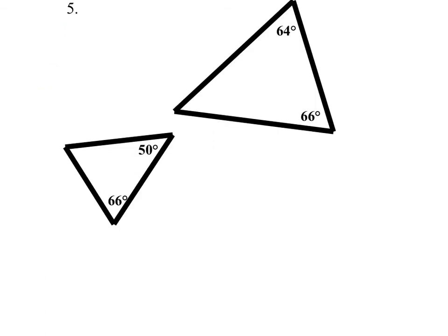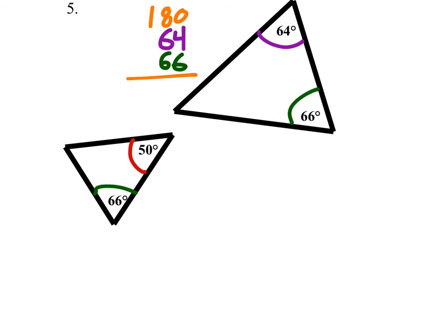Number five: we've got this 66-degree angle matching the other 66 degrees. The problem is this 50-degree angle is not the same as the 64-degree angle, which means we need to solve for the other missing angle. So let's check: we have the 64-degree and the 66-degree angles; take that off 180, and that would give us 50 degrees — which matches this angle. So yes, they are similar.